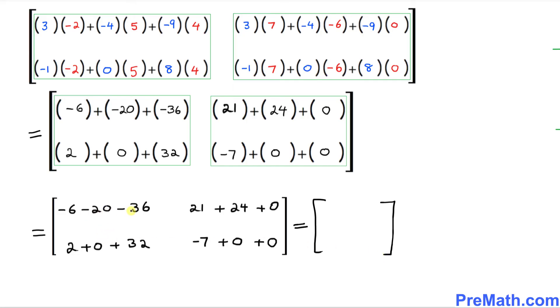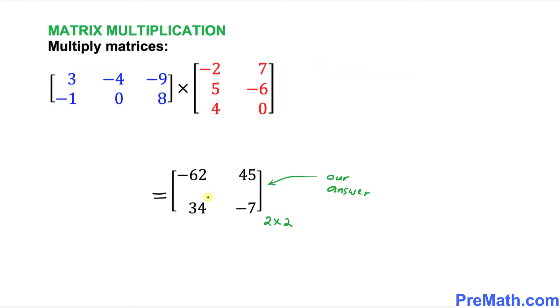-6, -20, -36. If we simplify that one, that is going to give us -62. That is going to give us 45. 35. This is going to give us 34. And finally, this is going to give us -7. And that is our answer matrix. So thus, our answer matrix turned out to be this one with two rows and two columns. And that is our answer.